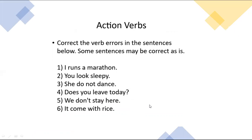Now correct the errors in the sentences below. 'I runs a marathon' is wrong — we don't use S with 'I.' 'He looks sleepy' is correct. 'She don't walk' is wrong because we must use 'doesn't' for third-person singular (he, she, it). 'Does you live today?' is also wrong — we use 'do' not 'does' with 'you.' 'We don't stay here' is correct. 'It come with right' should be 'it comes with right.'